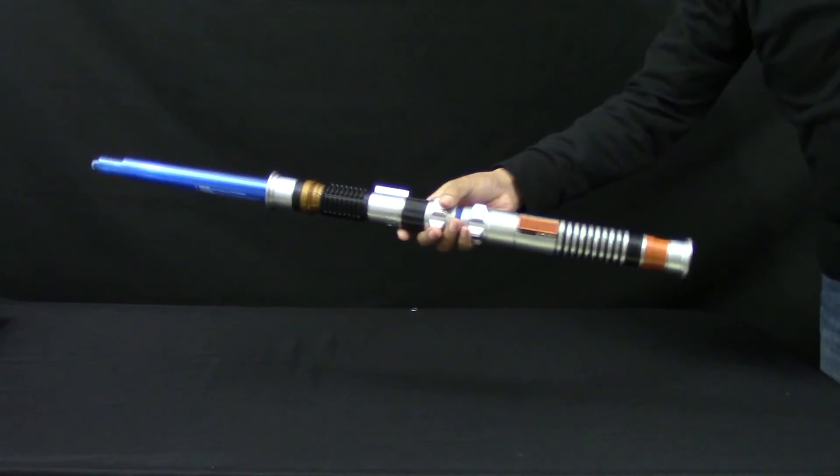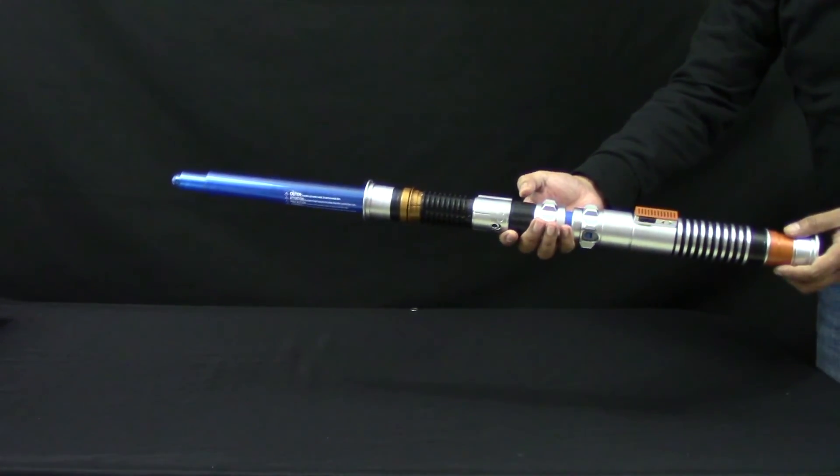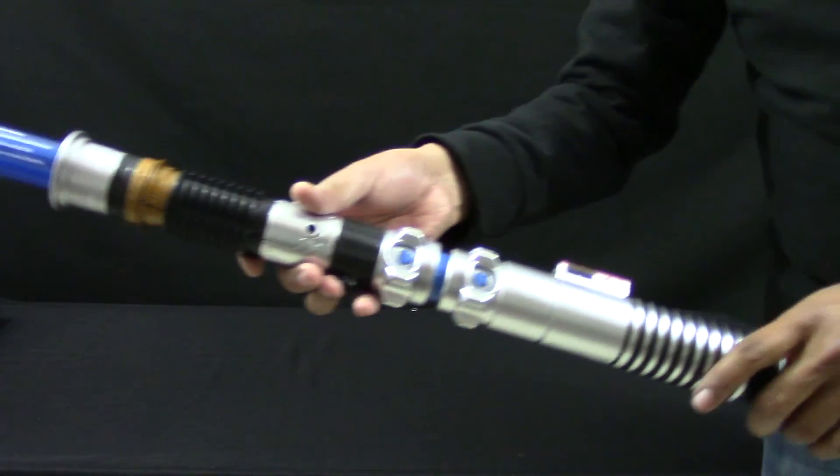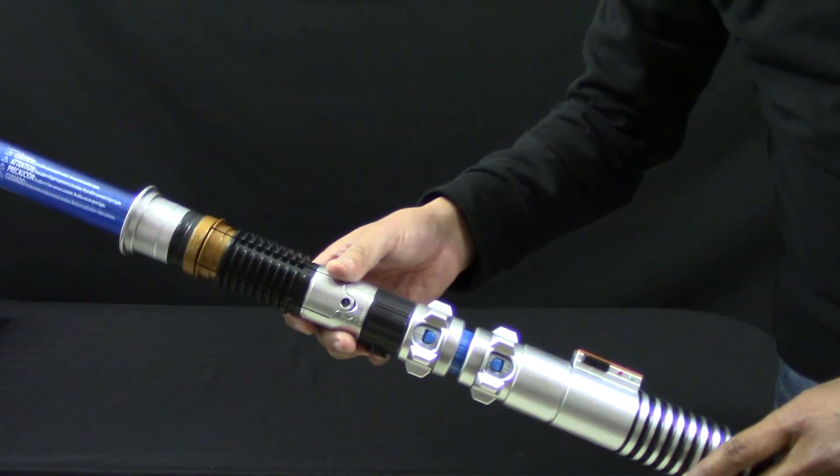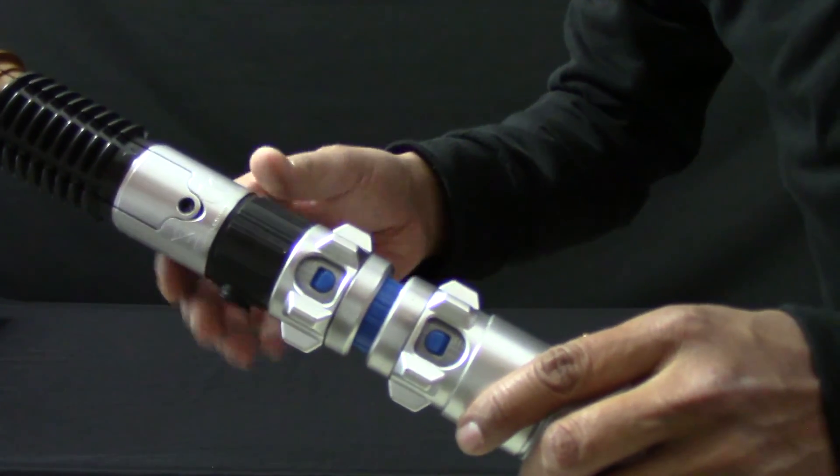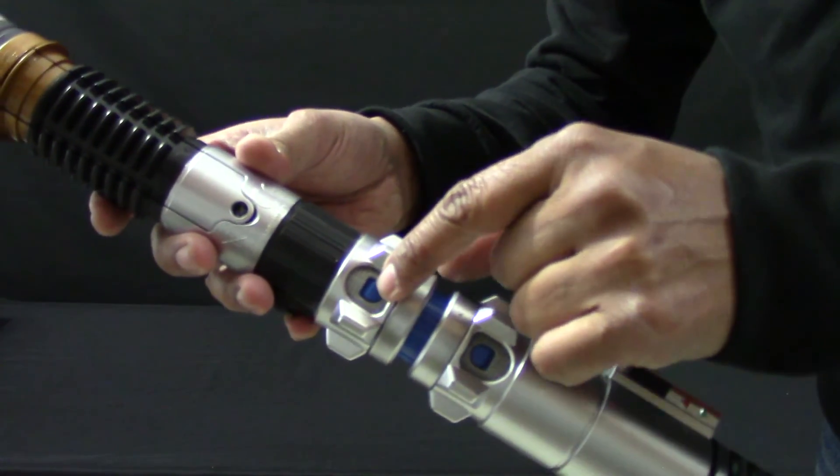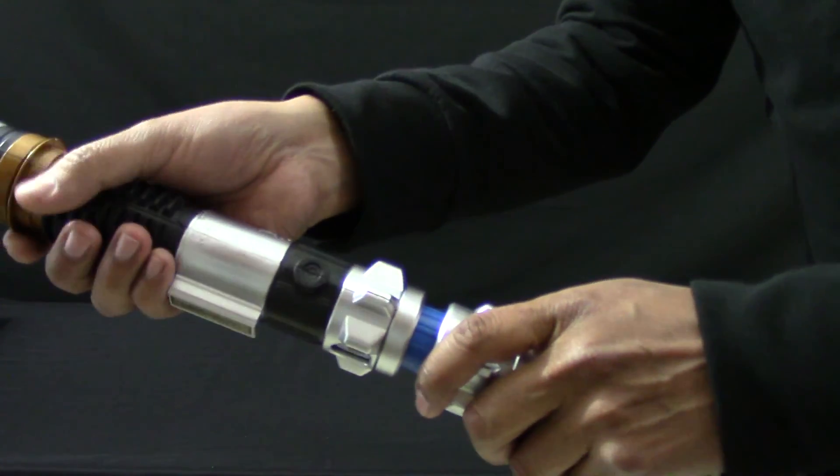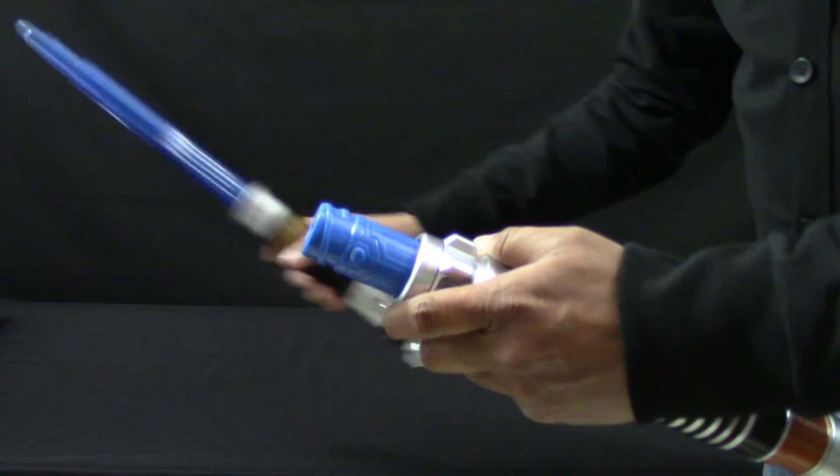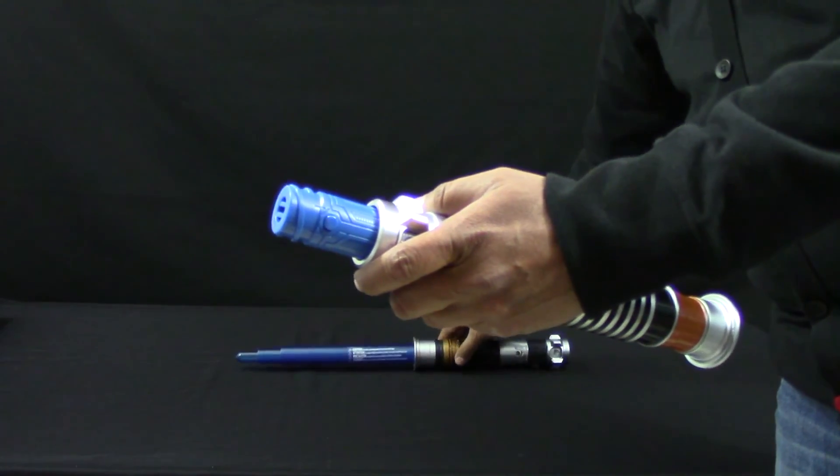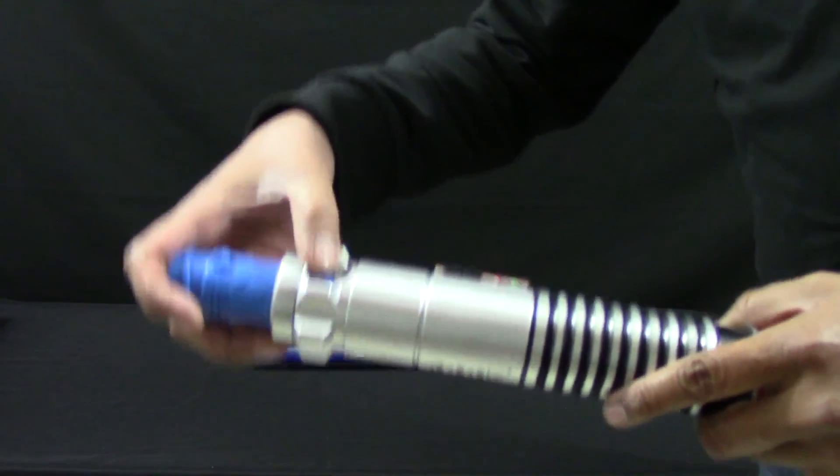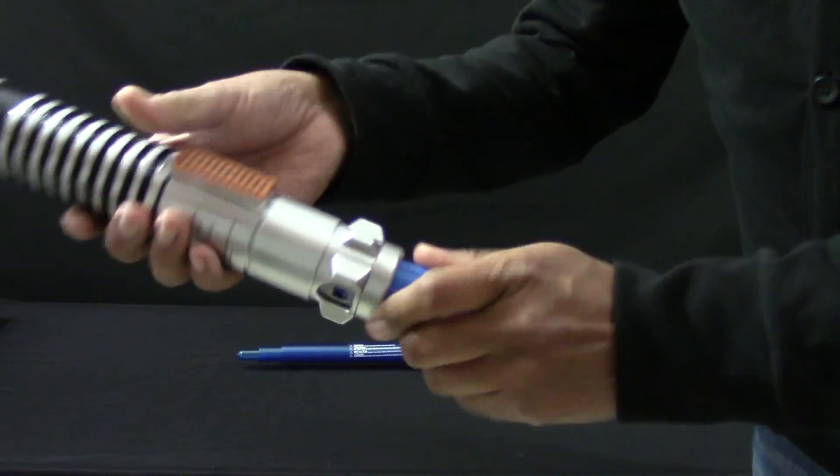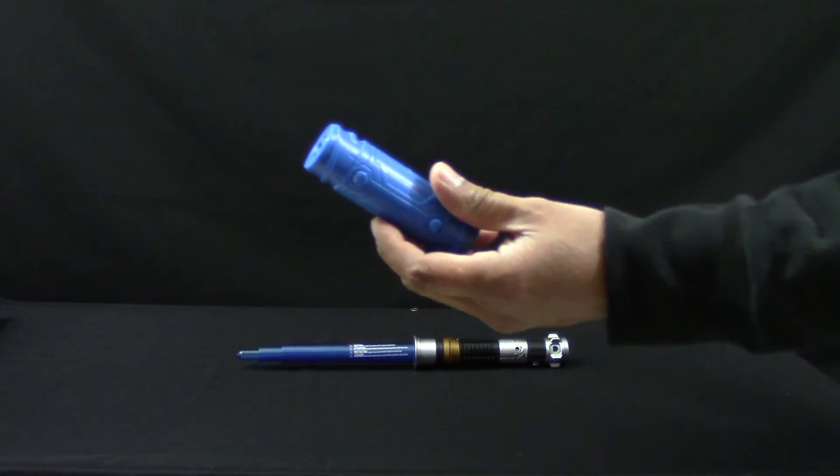As both lightsabers are telescopic, we can retract them manually. And now, it's time to separate our lightsabers. We must press this button to unlock the adapter and turn it. And here it is.